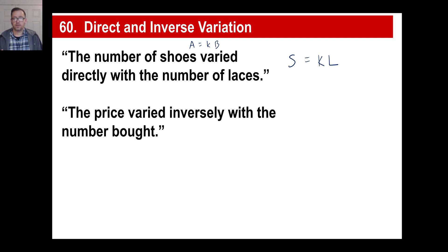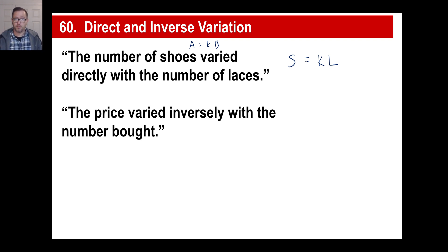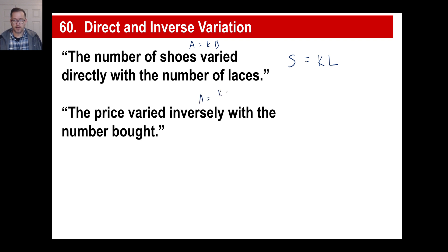How about this one: the price varies inversely with the number bought. The more you buy of something — like buying in bulk — the price goes down, not up. A bigger box costs less per ounce; that's what inverse variation means. If it's inverse, the equation is A equals K divided by B — so the price equals K over the number bought.